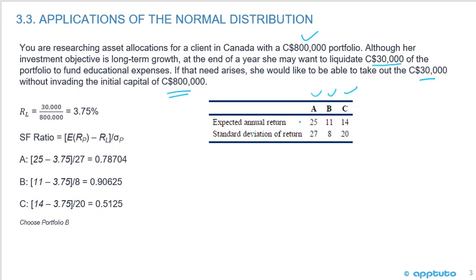Portfolio A has an expected annual return of 25% and standard deviation of 27%. Portfolio B has an expected return of 11% and standard deviation of 8%. Portfolio C has an expected annual return of 14% and standard deviation of 20%. Step one: calculate the minimum return RL. She wants to liquidate $30,000 from an $800,000 portfolio, so $30,000 divided by $800,000 gives RL — a minimum return of 3.75%.